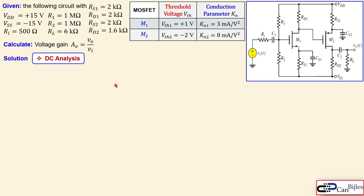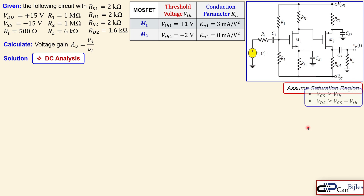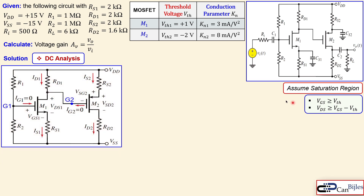We start first with the DC analysis. We assume for our transistors that they are operating in the saturation region, and these conditions must be checked — first for the N-channel and then for the P-channel. For DC analysis, all the capacitors are open circuits, so the source and load connections are disconnected.